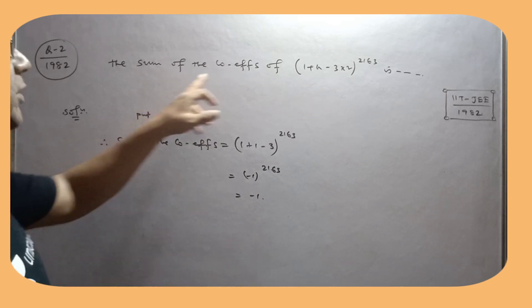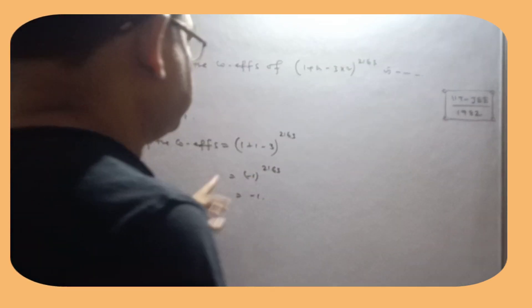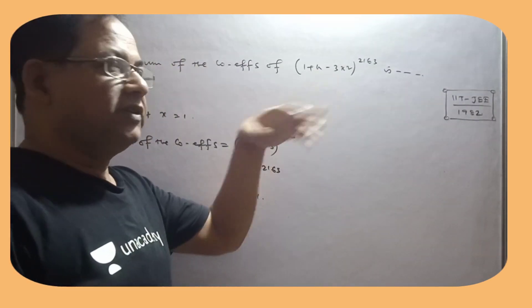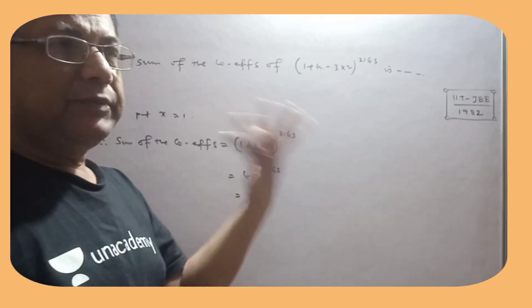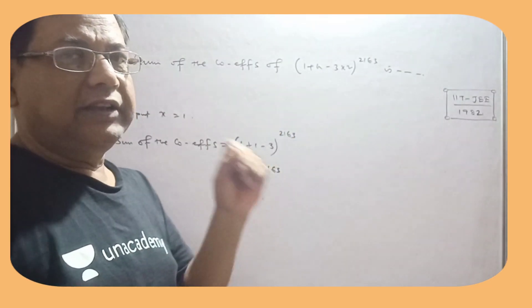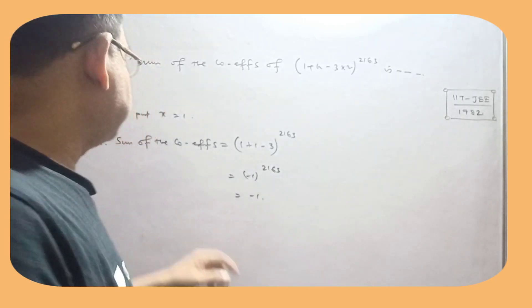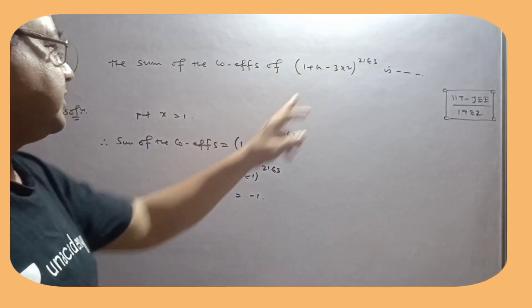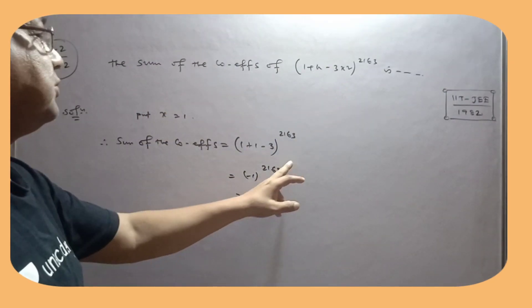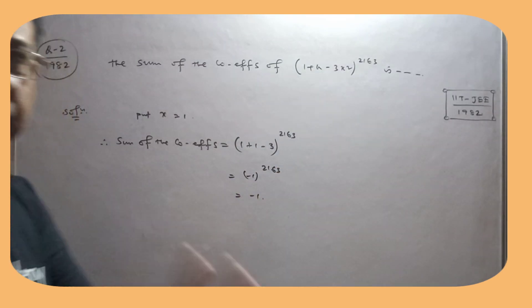Now, the sum of the coefficients: when the expression is of the form with variables x, y, z, put x equal to 1 in place of all variables. So put x equals 1, which gives you minus 1.